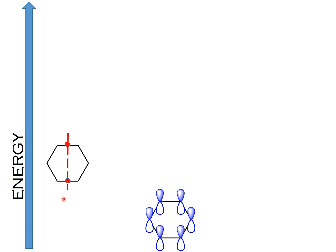Starting from the first carbon, we draw a p orbital with the shaded lobe above the ring and unshaded below. Moving around the ring with no node between carbons one, two, and three, they all have the shaded part up and unshaded down. Across the first node, the wave functions must be opposite, so carbon four has the shaded part down and unshaded up. Carbon five has the same wave function as carbon four — unshaded up — and carbon six has opposite wave functions to carbon one because of the second node. This is how you draw the second molecular orbital.